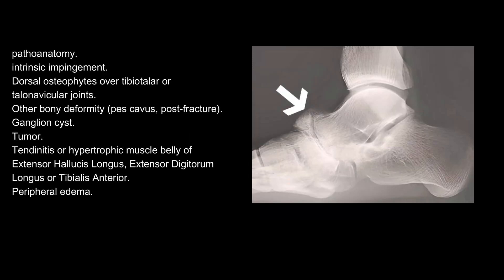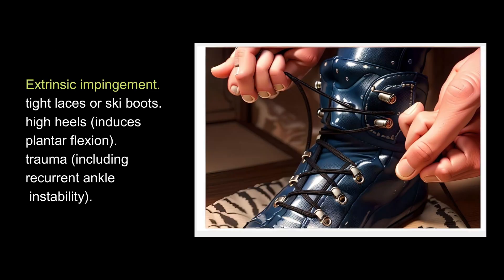Pathoanatomy. Intrinsic impingement includes dorsal osteophytes over tibiotalar or talonavicular joints, other bony deformity, pes cavus, post-fracture, ganglion cyst, tumor, and tendinitis or hypertrophic muscle belly of extensor hallucis longus, extensor digitorum longus, or tibialis anterior. Extrinsic impingement includes tight laces or ski boots, high heels (which induce plantar flexion), trauma, and recurrent ankle instability.